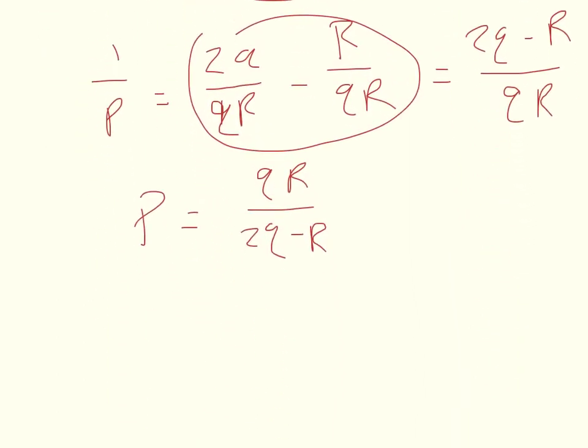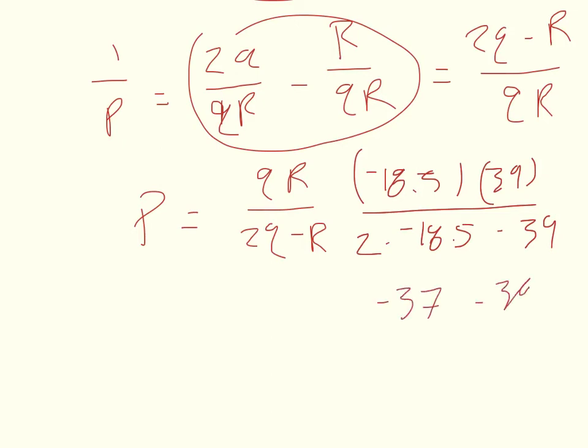So you have negative 18.5 times 39 for my radius divided by 2 times negative 18.5 minus 39. So what you'll get, you'll get a negative on the bottom and a negative on the top. Don't try to cancel out your negative yet because you can't just yet. So what you'll do is you'll get negative 37 minus 39, so that's negative 76. And then you can cancel out your negatives because you've got two negatives, that's going to make them positive.